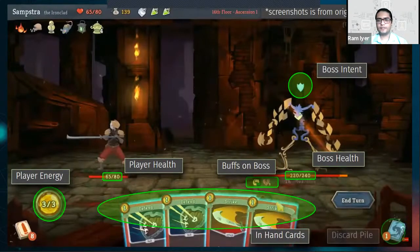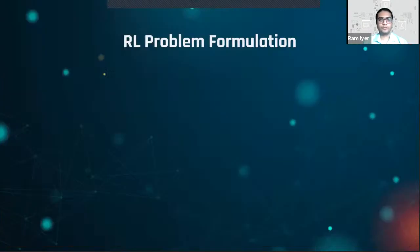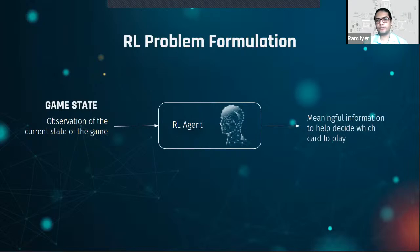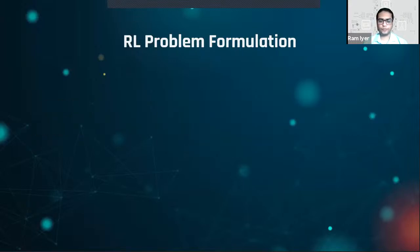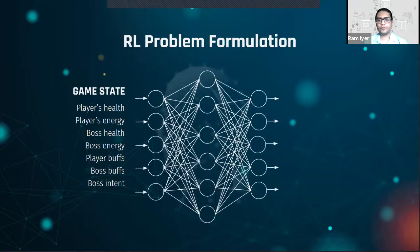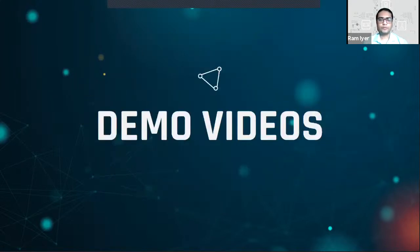A human takes in important information on screen: player energy, player health, buffs on the boss, boss health, boss intent, cards in hand, the discard pile, and the draw pile. With this information, the human chooses which card to play. We formulate this as an RL problem: we give the agent observations of the current game state, and the RL agent converts this into meaningful information to decide which card to play.